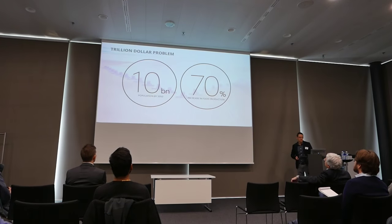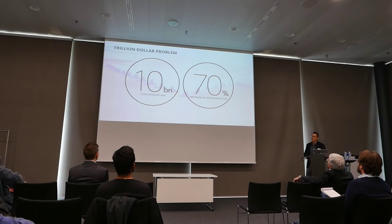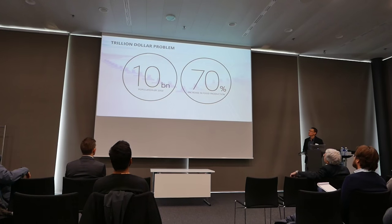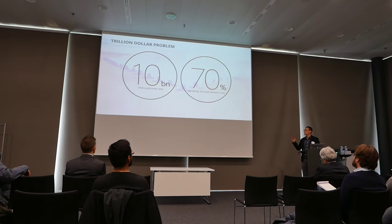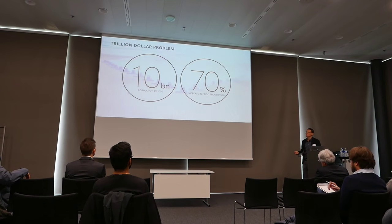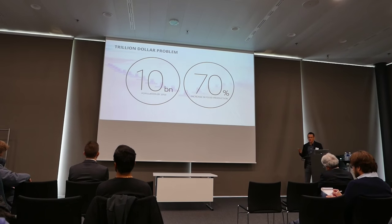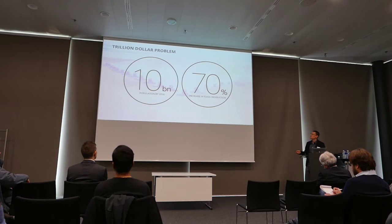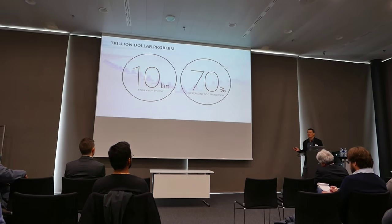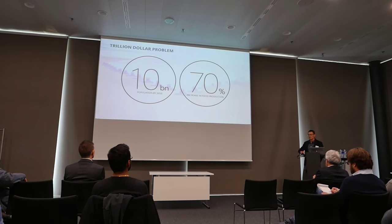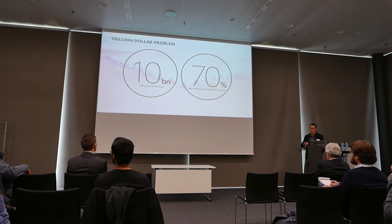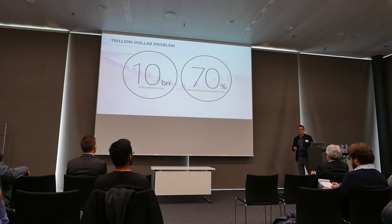This is where I'd like to start talking about agriculture and try to define the problem. This is the kind of official, widely accepted view of the agricultural challenge, which I actually disagree with to some extent, and I'll try to explain my point. The general consensus is that by 2050 the human population will reach 10 billion people, and the level of nutrition will also rise — for instance, in China people are much more demanding in terms of what food they eat.